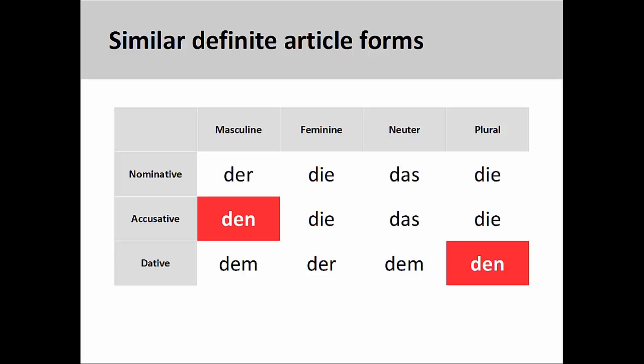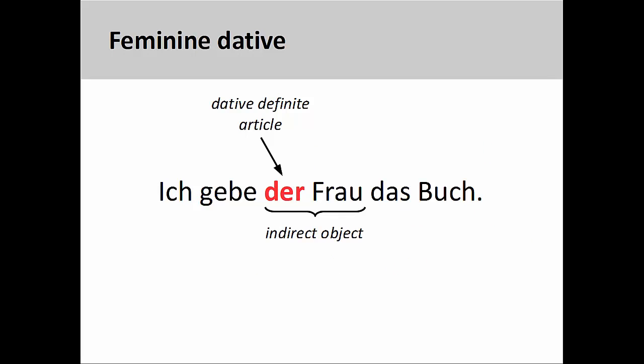Let's now take a look at some sample sentences. We've already looked at masculine dative earlier in this presentation. Let's take a look at the feminine dative: 'Ich gebe der Frau das Buch' — I give the book to the woman. Note that the feminine dative looks the same as the masculine nominative.